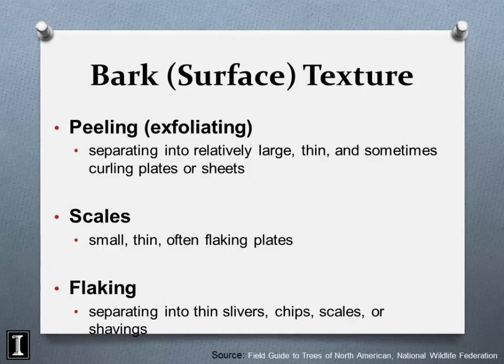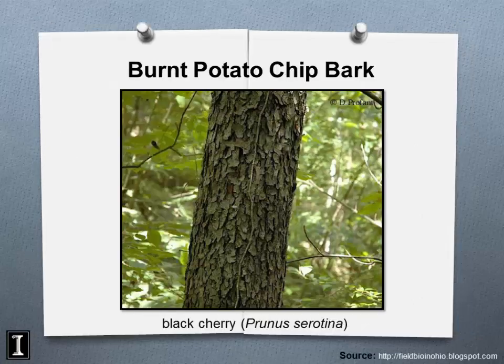More bark surface textures: peeling or exfoliating bark, scales, and flaking type bark. A classic example taught in dendrology class is black cherry, whose bark looks like burnt potato chips glued to a tree. It sticks with me 20-plus years later — that's how I teach people to identify black cherry.